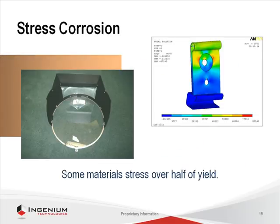This example is a clip for bolting lamp parts together. The atmosphere was corrosive, the stress was over half yield, and the material was susceptible to stress corrosion. The problem took some time to show up after a lot of units were in use. Proper material selection during design is a way to avoid such problems.